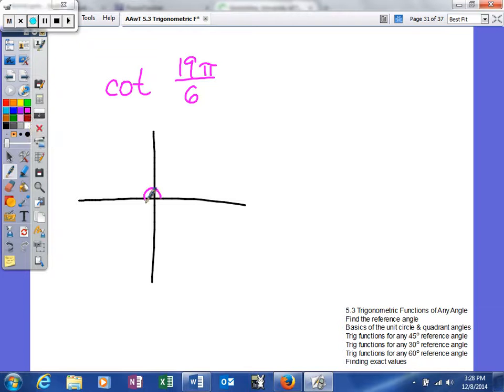From here to here, that's 1π. In terms of sixths, that would be 6/6π. Another half of a circle will be 12/6. And then here, we would be at 18/6.